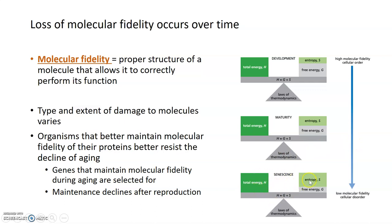Then ultimately in senescence, you can see that entropy now far outweighs the usable energy, which can lead to low molecular fidelity, breakdown of the structure of biomolecules like proteins, and ultimately to cellular disorder and aging.